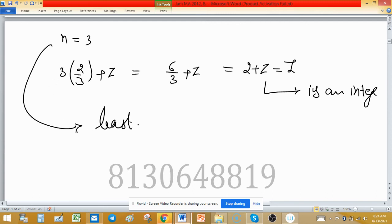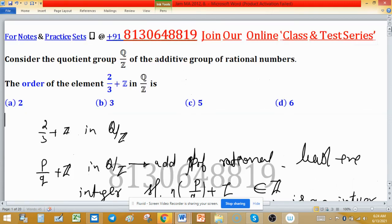We can find an integer whenever we put n equal to 6, but 6 is not least. 3 is least, so order of 2/3 + Z is 3. So according to this problem, option B is correct.